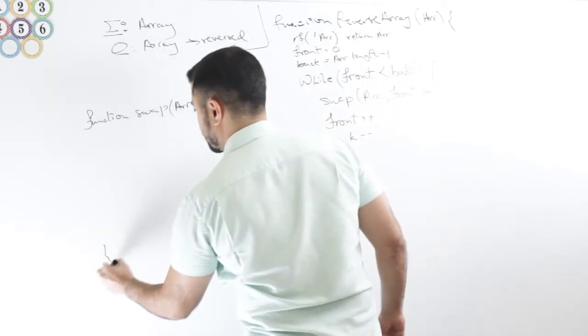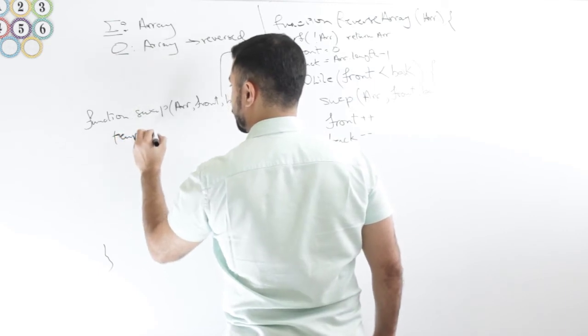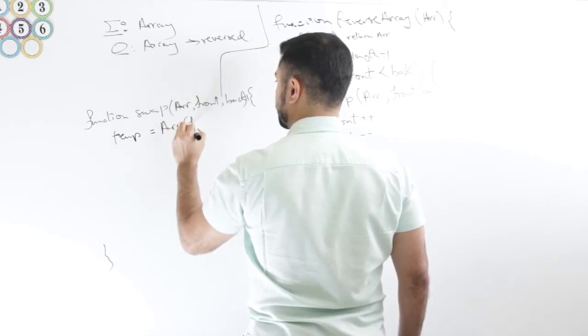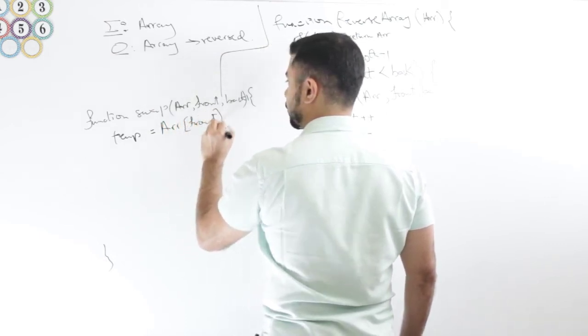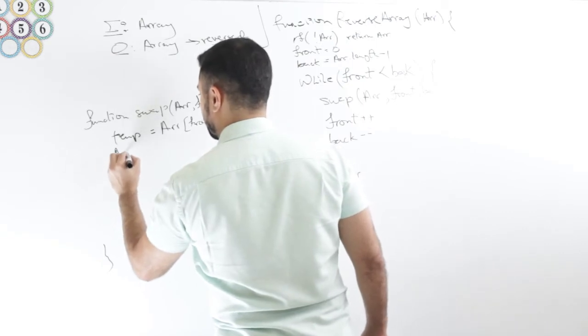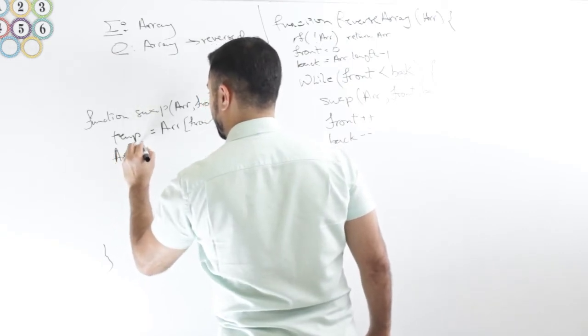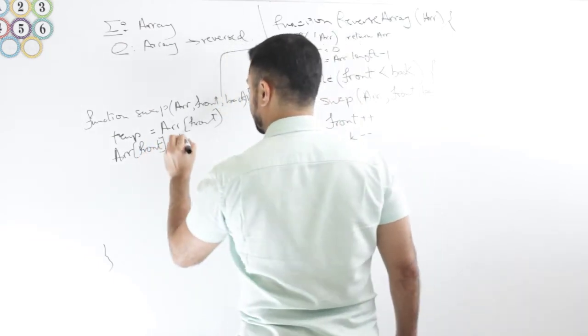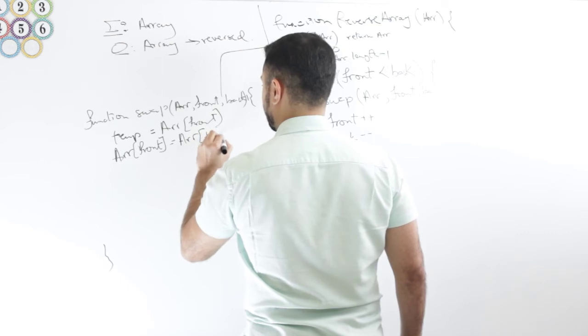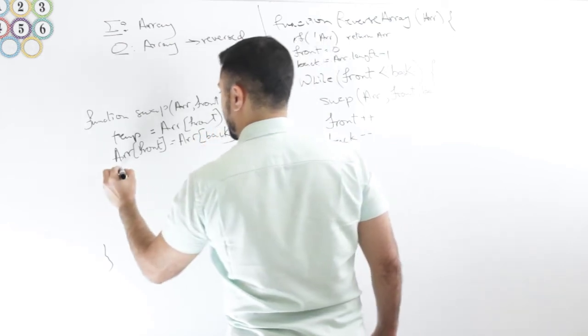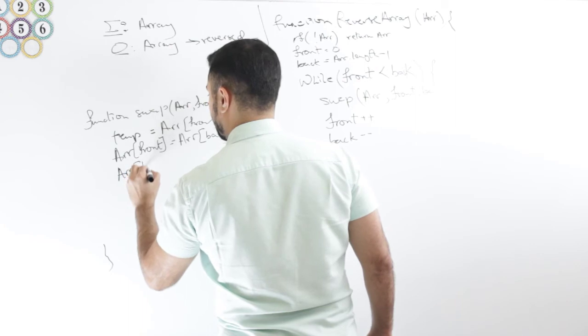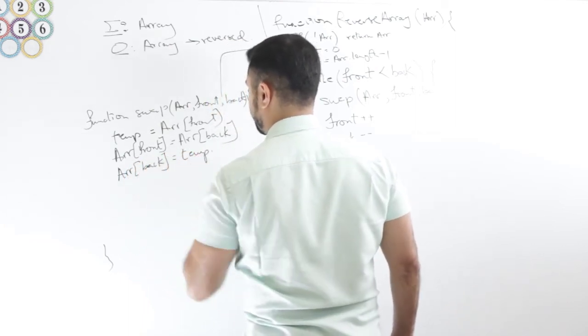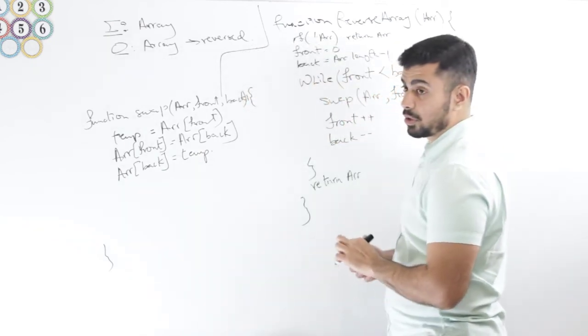In this case, I will have a temp to store the value of the front. Say temp equals array front. Then I will say array front equals array back. And finally array back equals temp.